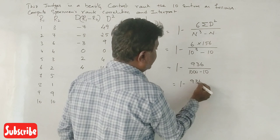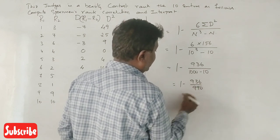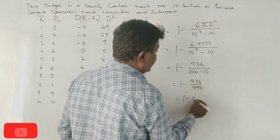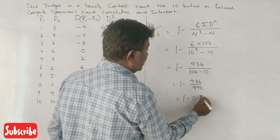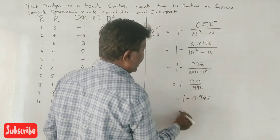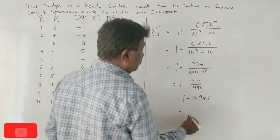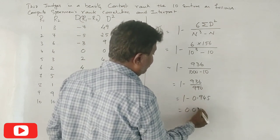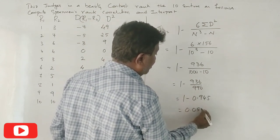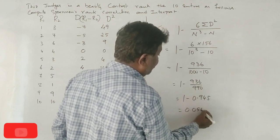This equals 1 minus 0.945. So 1 minus 0.945 equals 0.055. Correct? 545, sorry, 0.055.